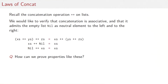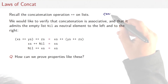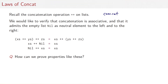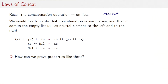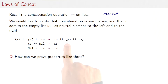Recall the concatenation operation ++ on lists. What would it mean to say that ++ or the version concat that we've written is correct? One criterion for correctness would be that ++ satisfies certain laws we would expect from concatenation. The laws are that concatenation is associative — we can put the parenthesis to the left or to the right of a double concatenation — and that nil is a right unit and a left unit.